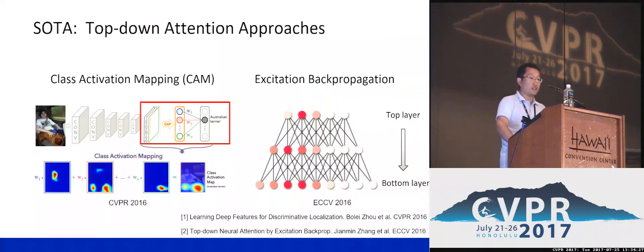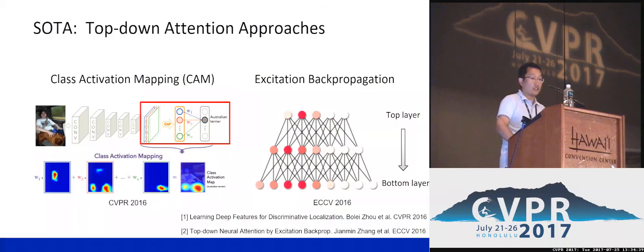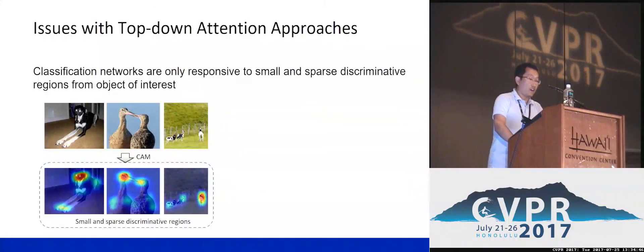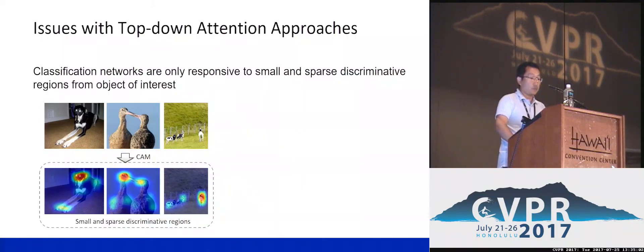Currently, several top-down attention approaches are proposed to roughly localize objects with classification networks, one from MIT and another from Adobe. In general, these two works provide solutions to back-propagate classification signals to convolutional feature maps for localizing semantic-aware regions. However, we found that the classification network only responds to small and sparse discriminative regions of the target object.